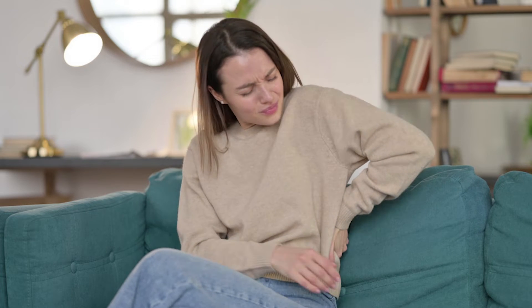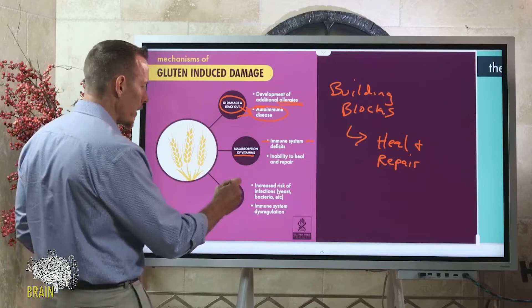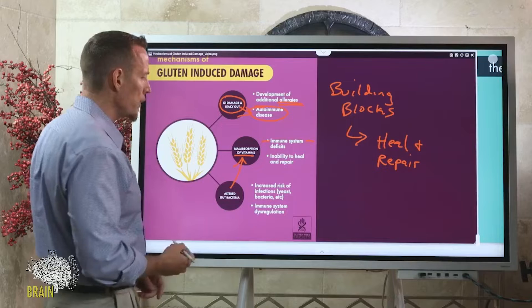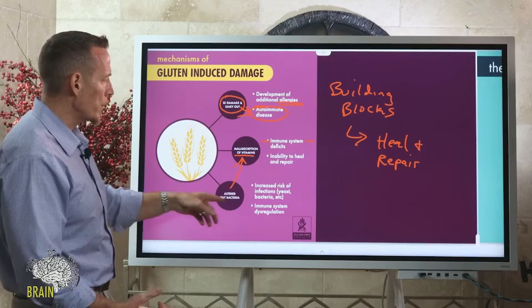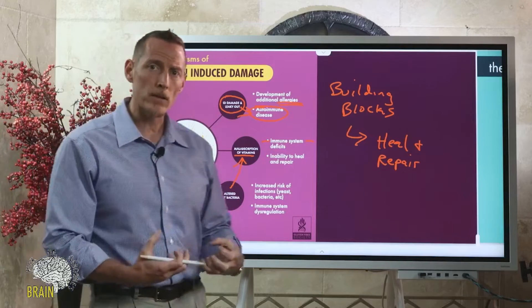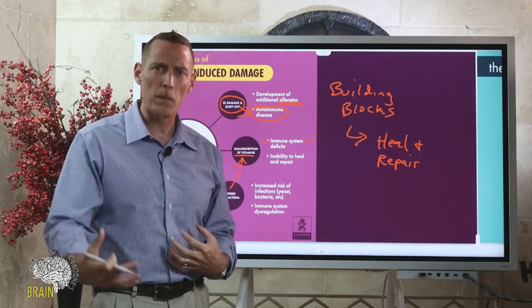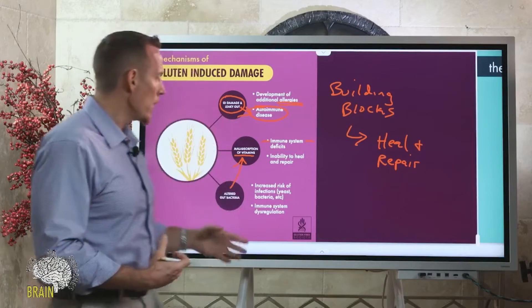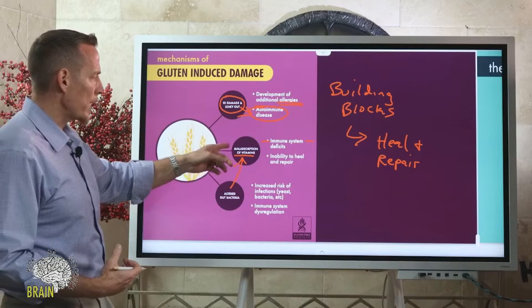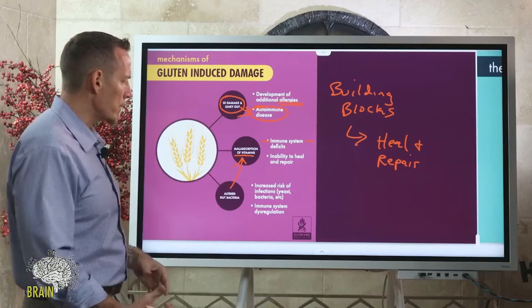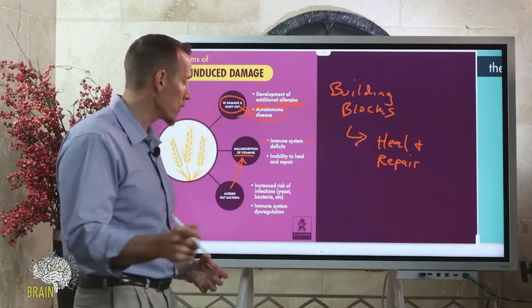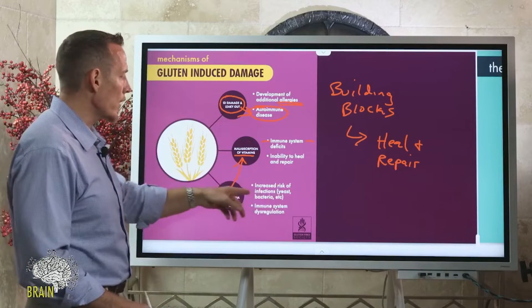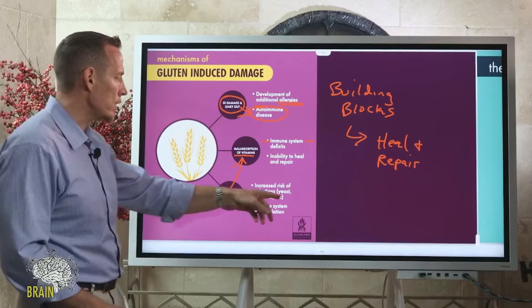Gluten can also alter healthy gut microbes. When you reduce certain species of bacteria, that causes malnourishment, because some of these bacteria produce B vitamins that we thrive on. If you're using antibiotics all the time and wiping out your gut bacteria, you can cause a lack of production of B vitamins — and some B vitamins are directly linked to pain, especially neuropathy.